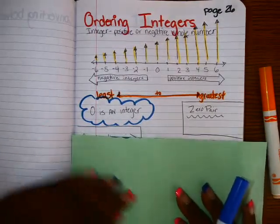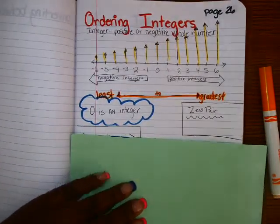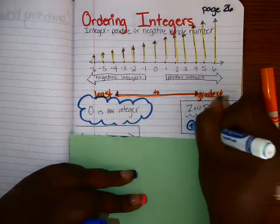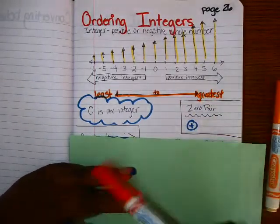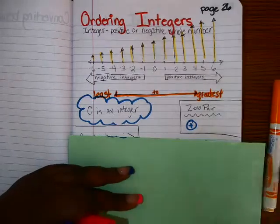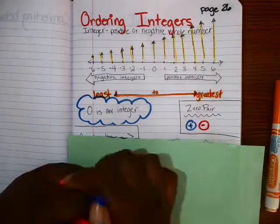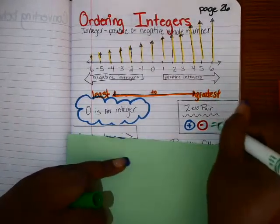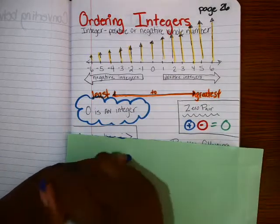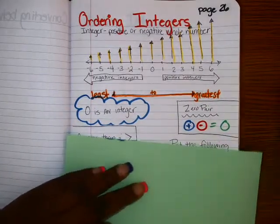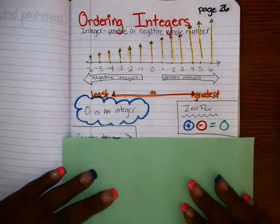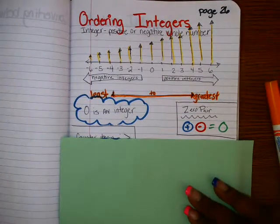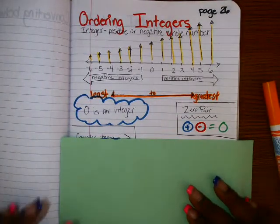Now I'm going to talk to you about what is a zero pair. A zero pair is when you have a positive and a negative. That positive and negative together cancel each other out, and so it equals zero. We'll study that when we're adding and subtracting, but you should know that a zero pair is a positive and negative that equals zero.